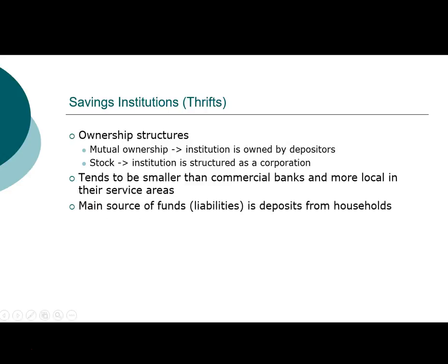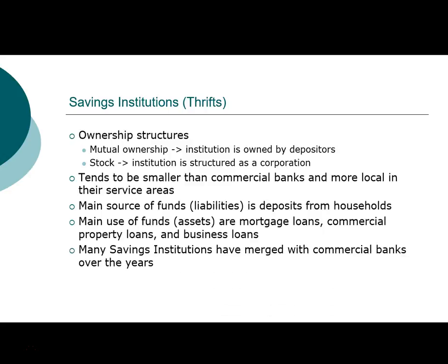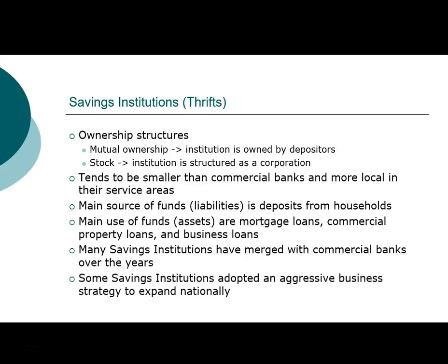The main source of funds — meaning the liabilities of the savings institutions — are deposits, and the main use of funds are mortgages, commercial loans to small businesses, property loans, and business operation loans. Many savings institutions have merged with commercial banks over the years and some are not as small anymore. Some started as small local firms but through mergers and acquisitions have become much bigger, particularly since the 2000s when some savings institutions were very aggressive in expanding their business strategy across geographic locations and also across industries.